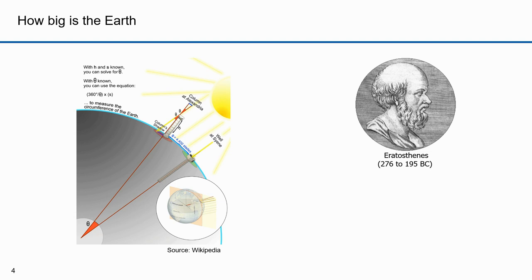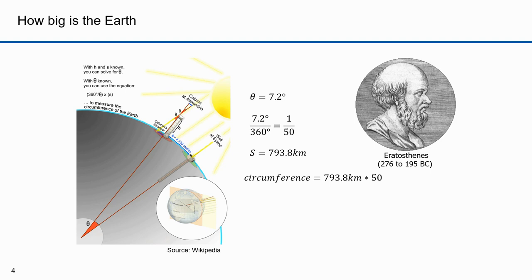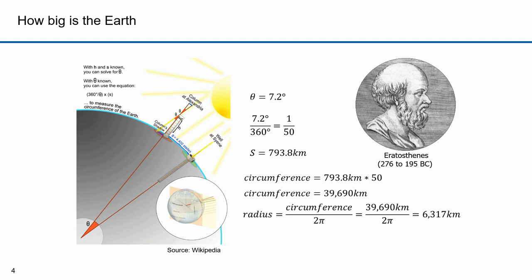If we go back to the Wikipedia diagram, we know the angle is 7.2 degrees. 7.2 divided by 360 is 1 over 50. The distance from Alexandria to Syene is thus 1/50th of the circumference of the earth. Eratosthenes knew the distance from Alexandria to Syene was 4,400 stadia, equating to 793.8 kilometers. 793.8 times 50 gives the circumference of the earth: 39,690 kilometers. Since he knew the value of pi, Eratosthenes could also compute the radius of the earth — he calculated it was 6,317 kilometers.